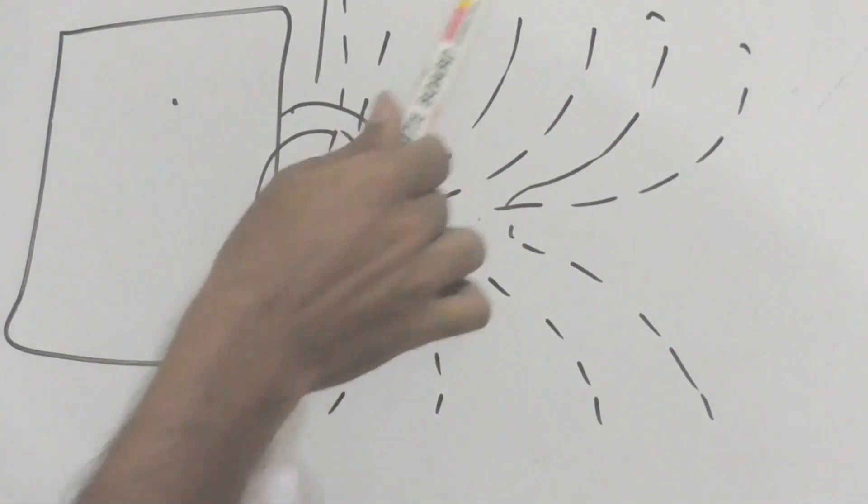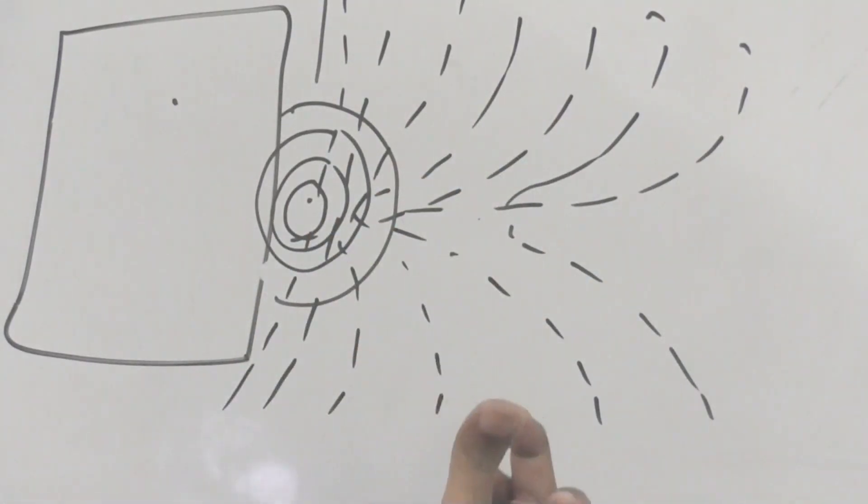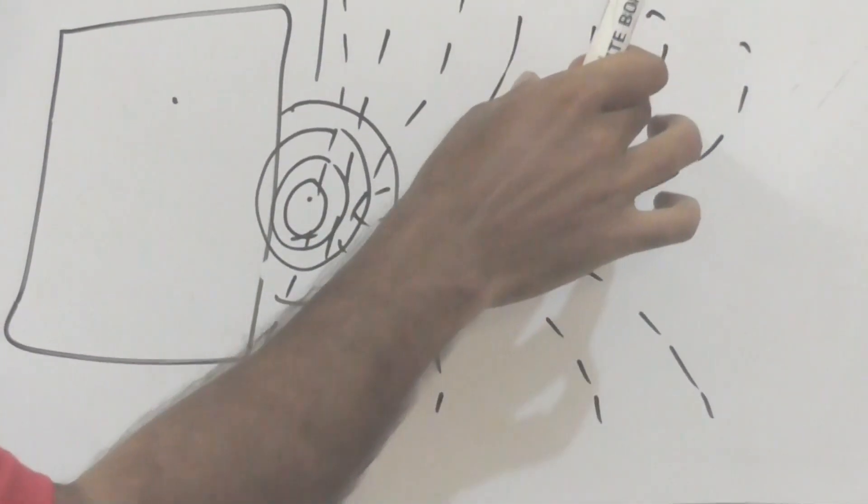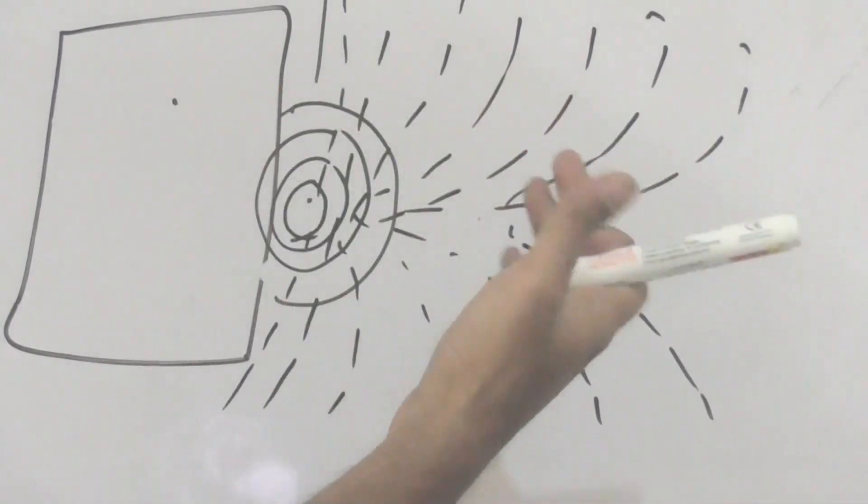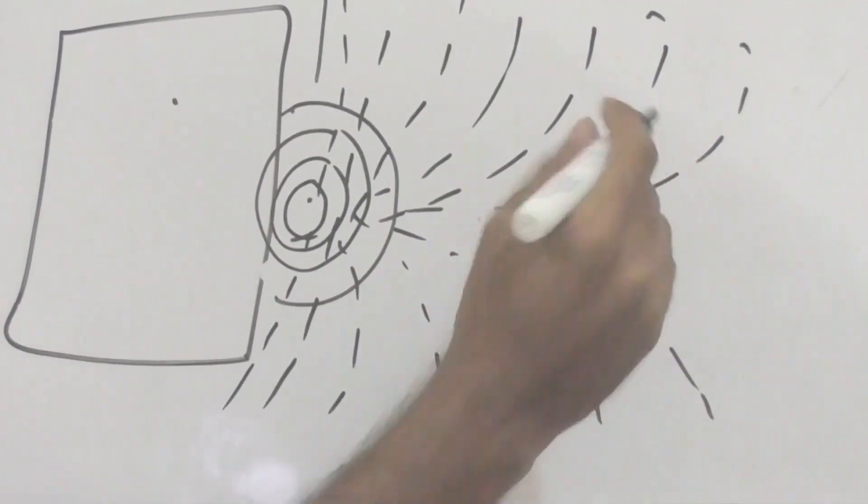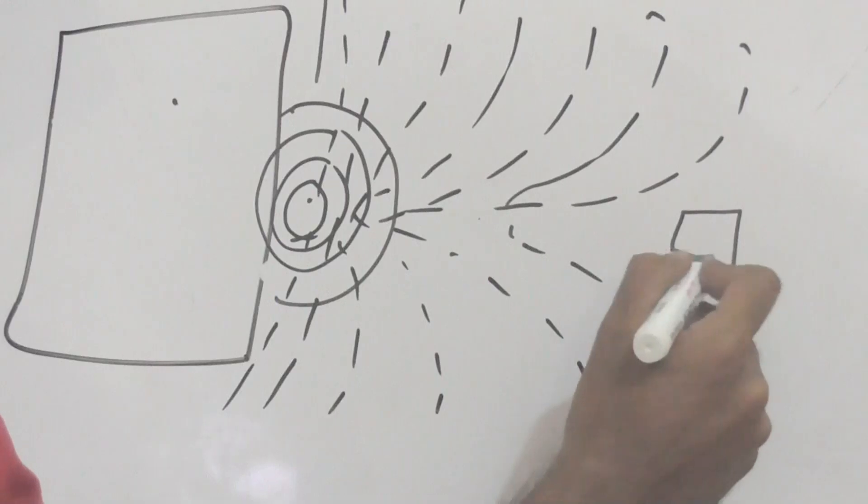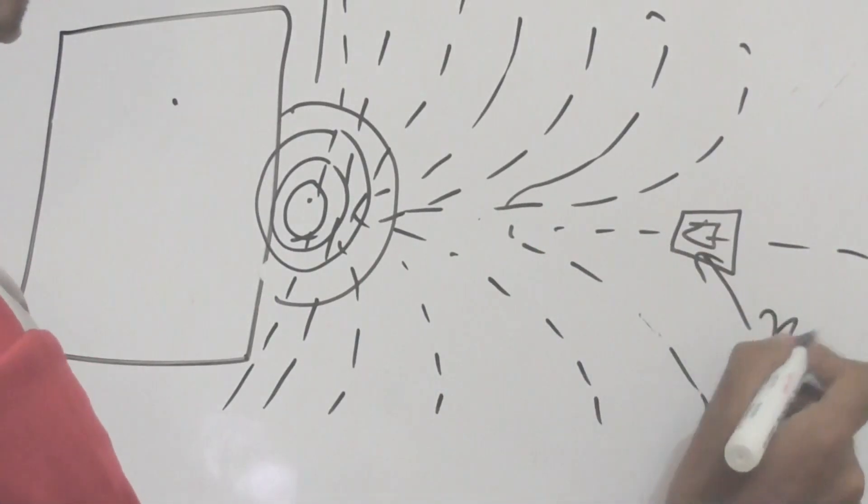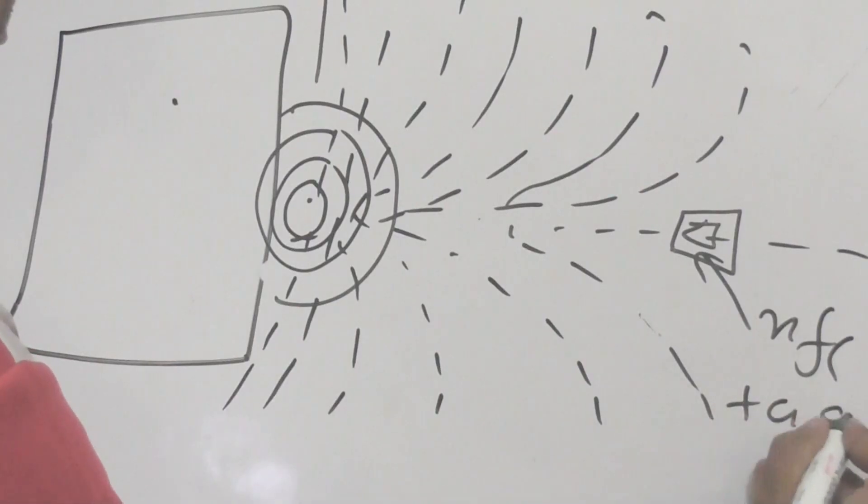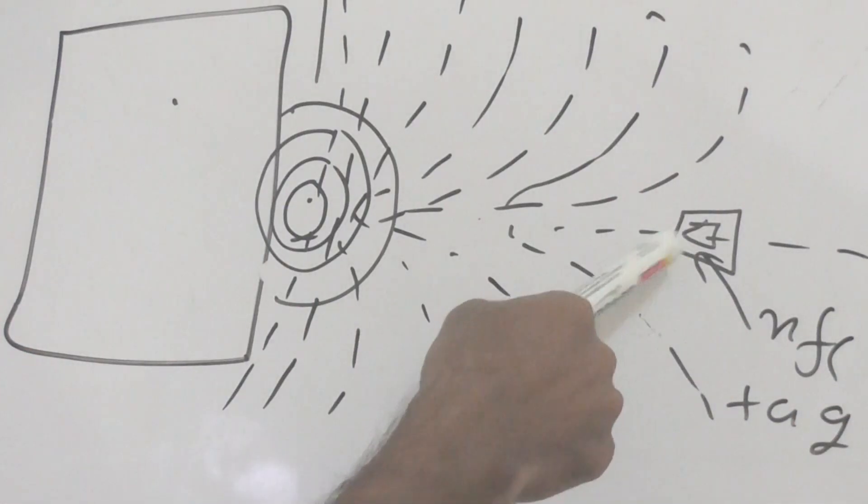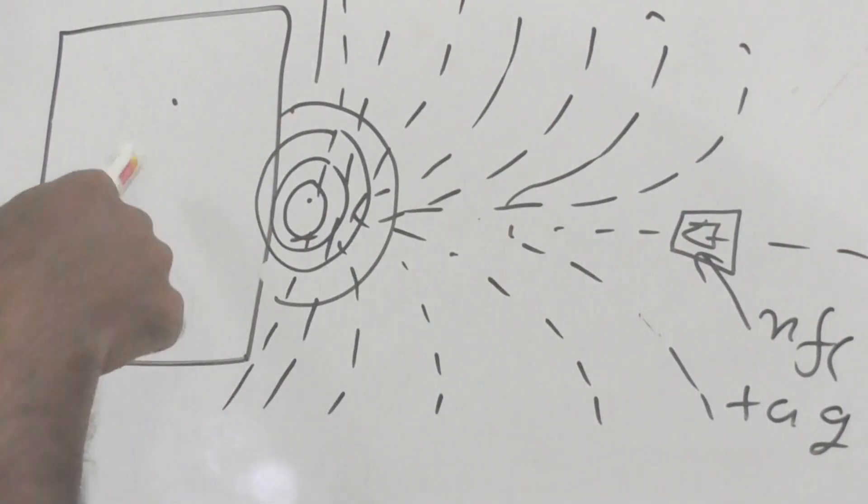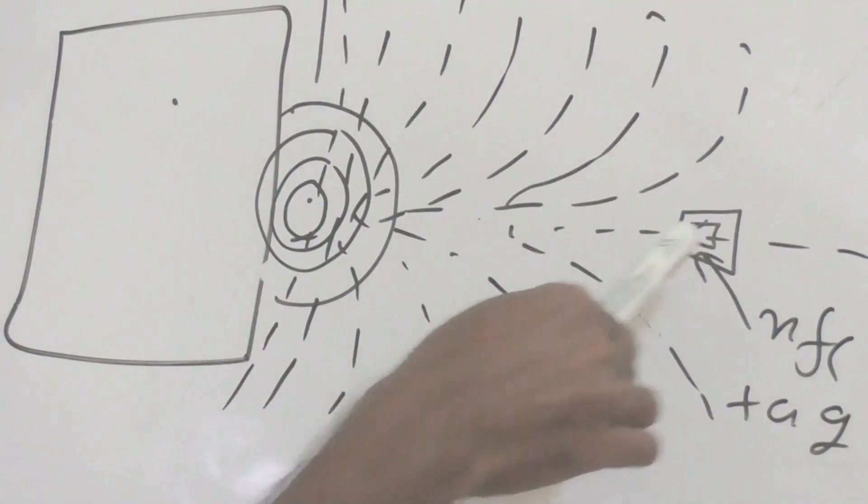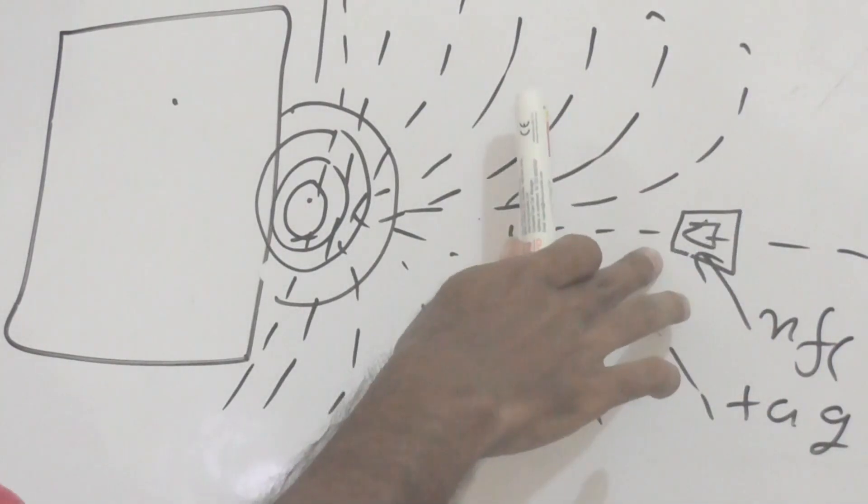Okay, so now whenever a secondary coil, in our case it is an NFC tag, is placed inside this magnetic field, electricity will be induced in that secondary coil. So let's assume that this is our NFC tag, and this NFC tag is placed inside the magnetic field of the smartphone. What will happen is it will induce electricity due to the magnetic field, and it will start transmitting the information which is stored in it.